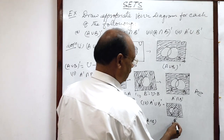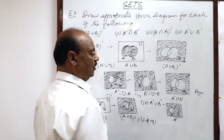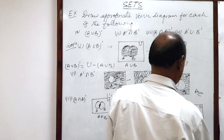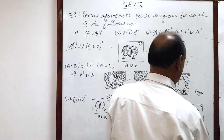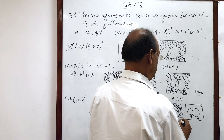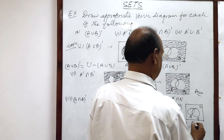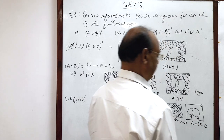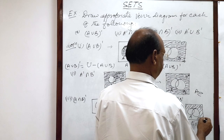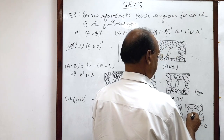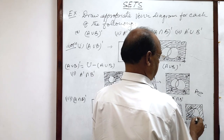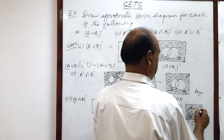Now, in the next diagram, we will get B complement. B complement means universal set minus set B. A complement means universal set minus A. B complement means universal set minus B. So only the portion of B will not be shaded — the rest of the part will be shaded here — only this set B will not be shaded.